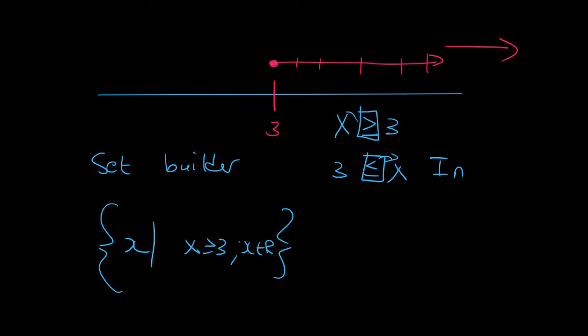In interval notation x∈, we then put a square bracket. Why? Because 3 is included. Now we don't have a number to the right and so we use infinity and infinity is always round. And if your infinity sometimes looks like that, no worries. No one's judging you. I've done that many times.